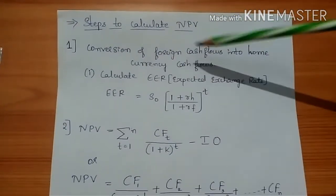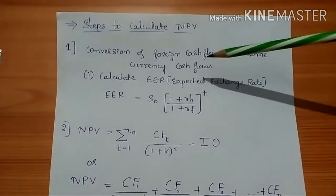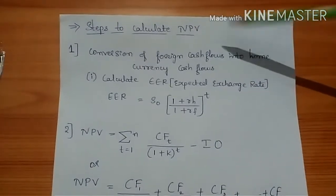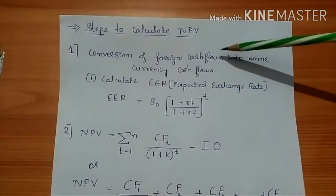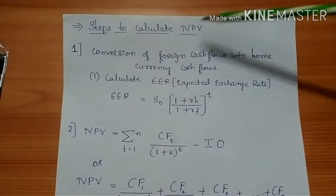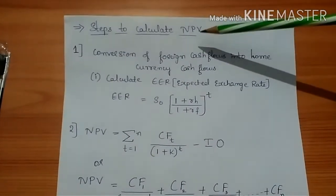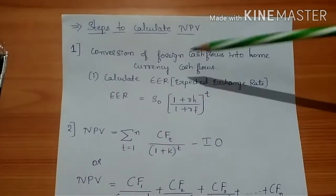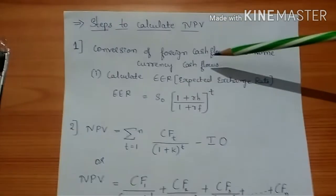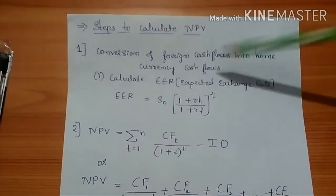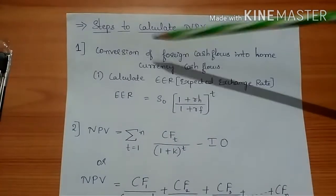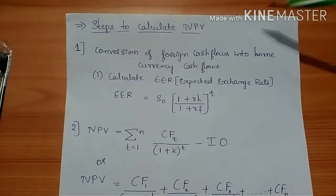The first step is conversion of foreign cash flows into home currency cash flows. This step only comes whenever we are going to use multinational capital budgeting or international capital budgeting. For the NPV technique, the first step will be conversion of foreign cash flows into home currency cash flows because the cash flows are between countries, so foreign currency as well as home currency occurs.